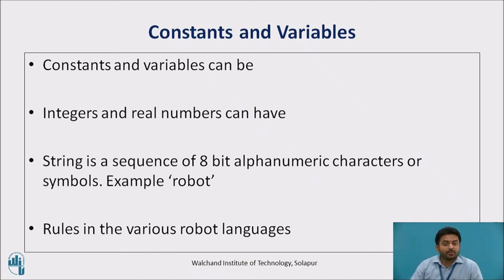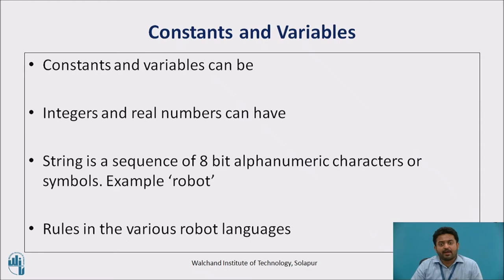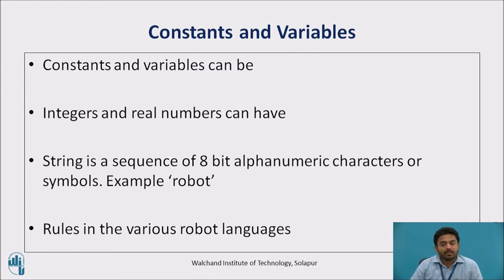Constants and variables can be integers (whole numbers), real numbers containing a decimal point, or strings that are enclosed in quotes. Integers and real numbers can have positive or negative values, indicated by a plus or minus sign. A string is a sequence of 8-bit alphanumeric characters or symbols usually surrounded by a marker — for example, 'robot' as shown in the slide. There are rules in the various robot languages for establishing variable names. Typical rules are that the variable name must begin with an alphabetic letter and must not be identical to a language vocabulary word.